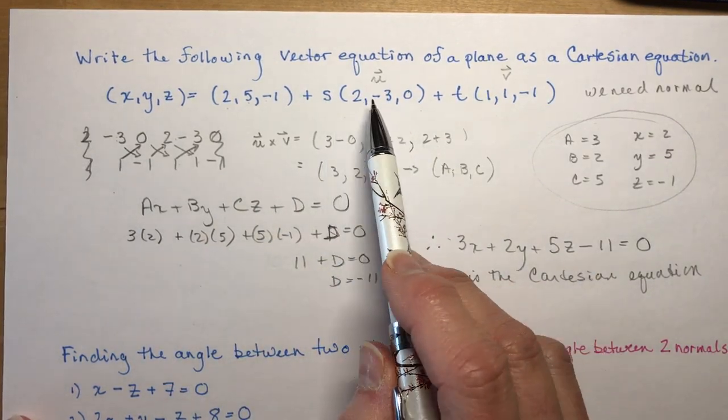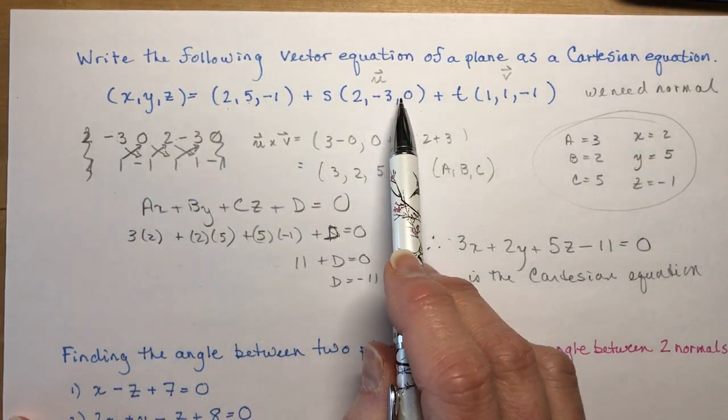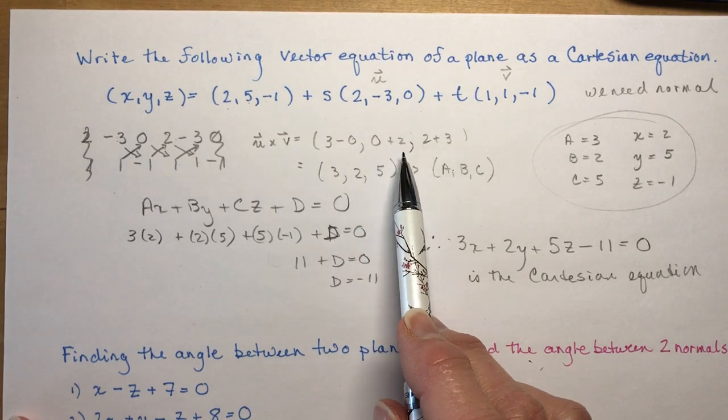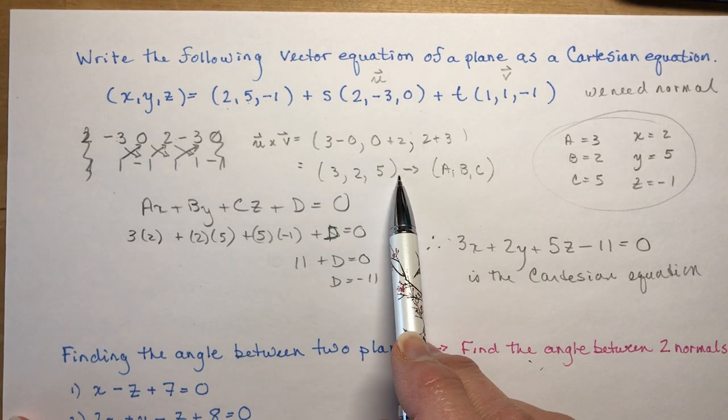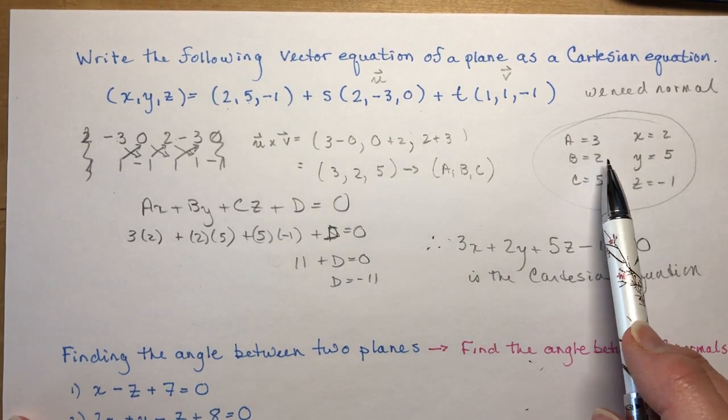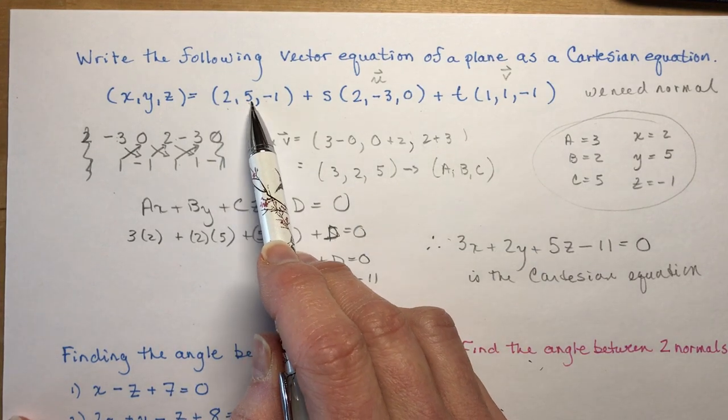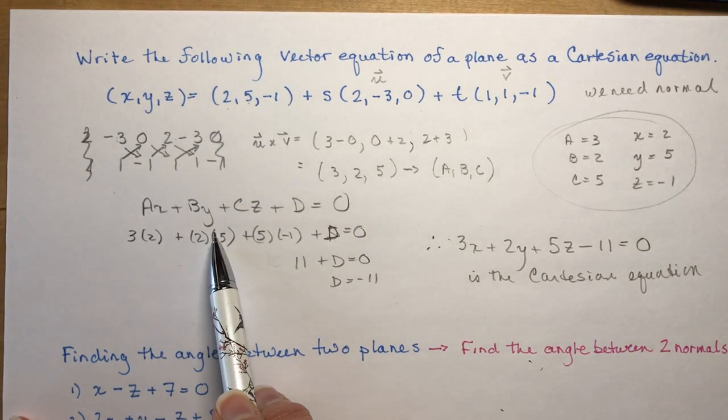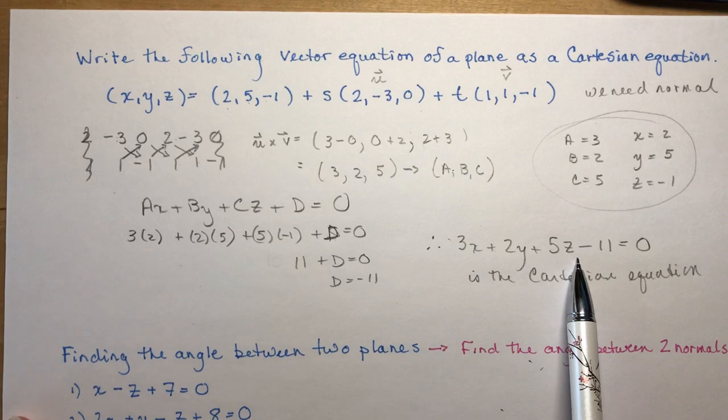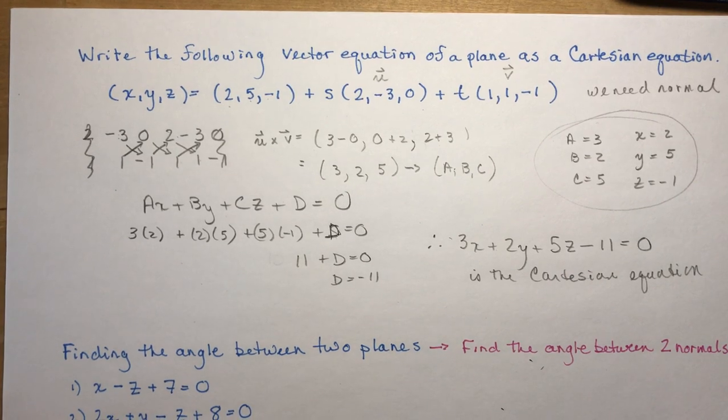So again, all we did was we had to find a normal. We used the cross product of the two direction vectors to get our ABC. We wrote out our ABC here with our XYZ from here. We plugged them in. We solved for D. We write out the equation. So easy.